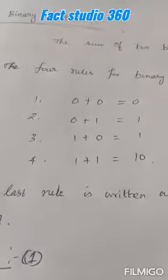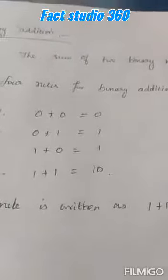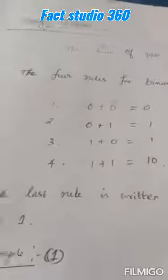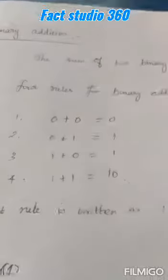The fourth rule is 1 plus 1 is equal to 10. The fourth rule is different from the others. It is written as 1 plus 1 is equal to 0 with a carry of 1. These are the binary addition rules to know about binary digits.